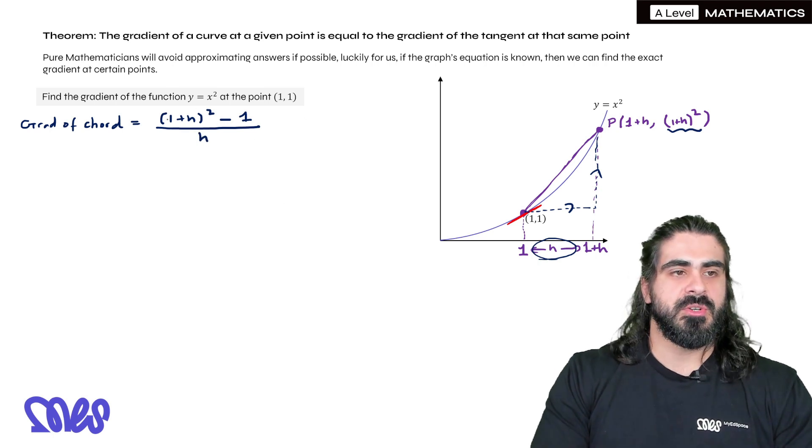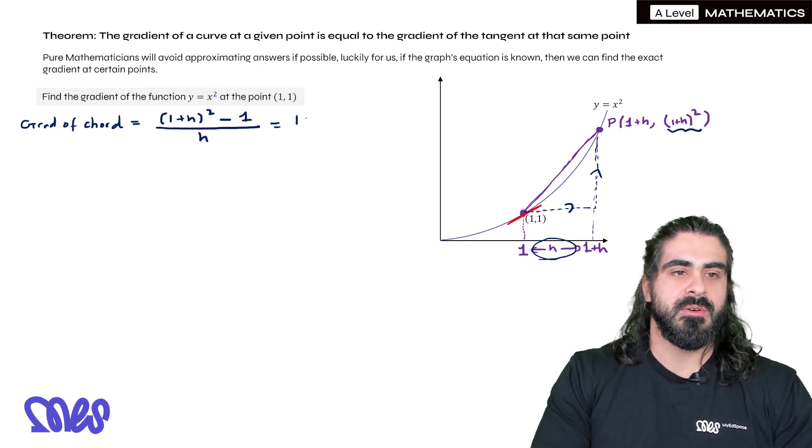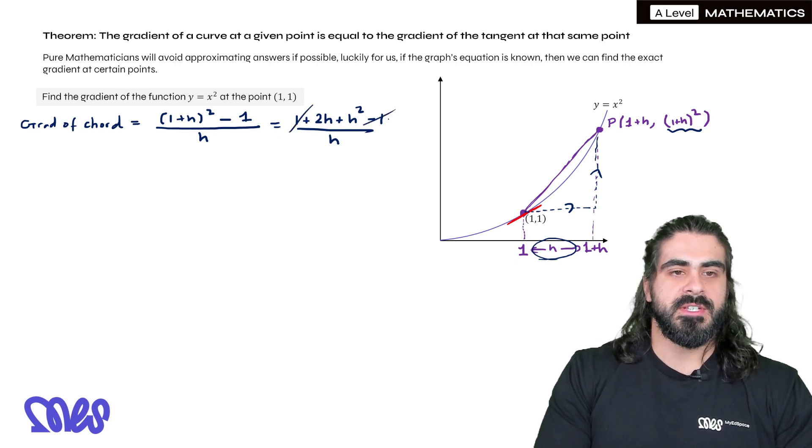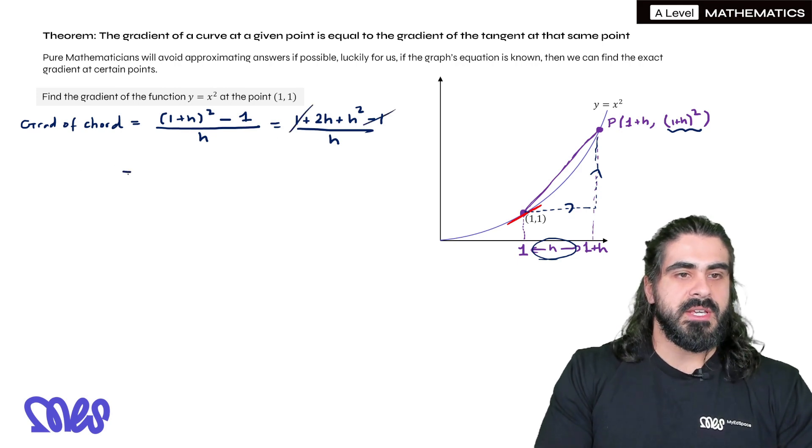Now we can do some simplification. So we can expand this bracket. If you write out the bracket twice and expand, you'd get 1 + 2h + h² - 1, that minus 1 at the end, all over h. And you should notice that the ones cancel on the top, so we get (2h + h²) / h.